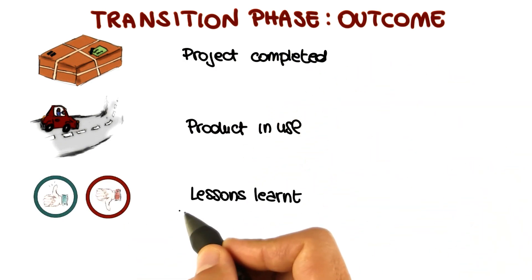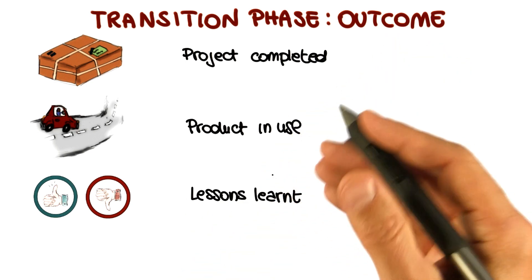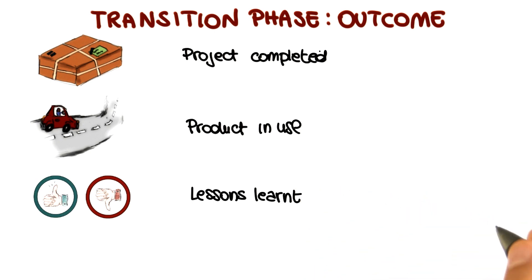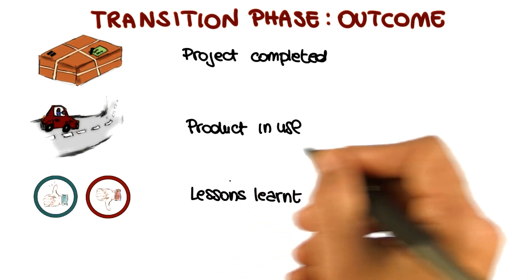Another outcome will be a lesson learned. What worked? What didn't work? What should we do different in the next cycle or in the next development? And this is a very important part of the whole process because it provides feedback between cycles and between projects.